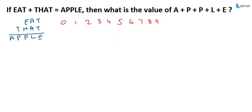So, T plus the other number must produce a two-digit number. When is this possible? T is equal to 9, then this becomes 0, and A must be equal to 1. So, 1 is allocated to A.